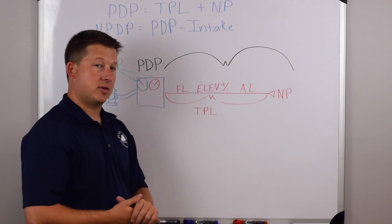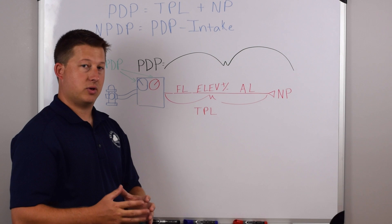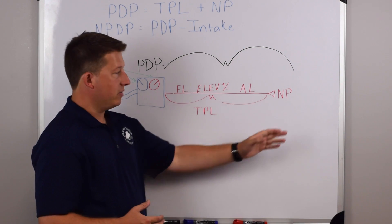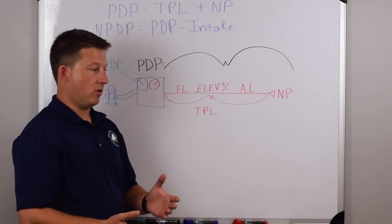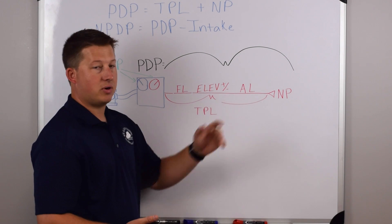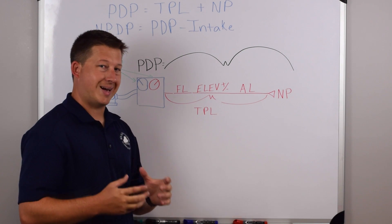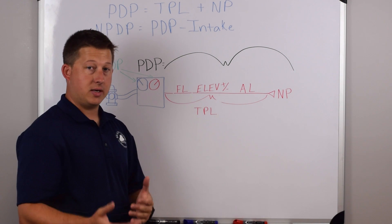They may ask, what's the nozzle pressure for a given nozzle, a type of nozzle, and that's only talking about this end. What does the nozzle need to operate at? They may say, what's the elevation gain or loss? That's only one component, and the appliance loss is only one component. You can pick and choose how the question is asked as to what answer you need to give.